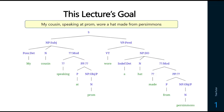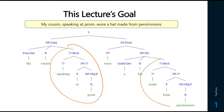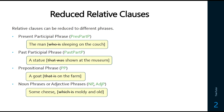In this lecture, we want to look at reduced relative clauses. These are things that start as relative clauses but then reduce to different phrases. We have two things to look at: 'my cousin speaking at prom wore a hat made from persimmons.' We could say 'my cousin who is speaking at prom wore a hat that is made from persimmons.' These are the different types of phrases that relative clauses are going to reduce to.